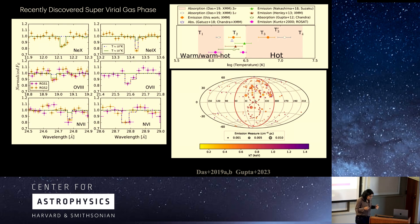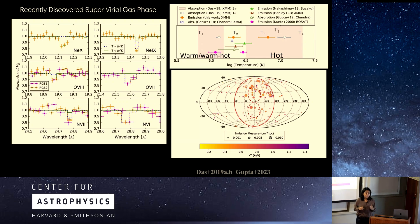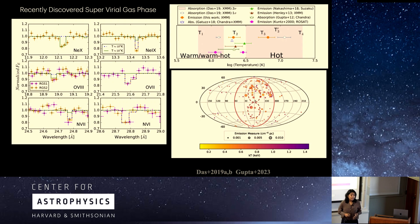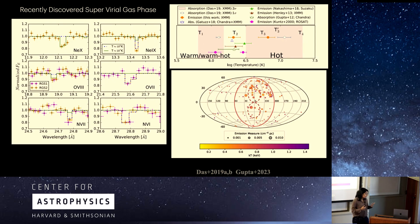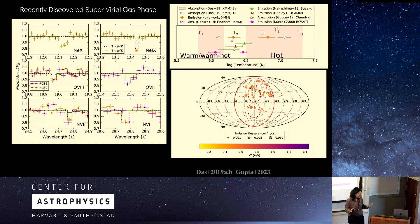There have been many other detections along different sightlines, not only in absorption but also in emission, and not only towards particular sightlines. Also in all-sky surveys like HaloSat, eROSITA, and Suzaku there have been detections in all-sky emission and in stacked all-sky X-ray absorption as well. So this super virial phase is very abundant in the Milky Way CGM.